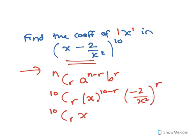So that's 10Cr, x to the 10 minus r, times minus 2 to the r, over x to the 2r.